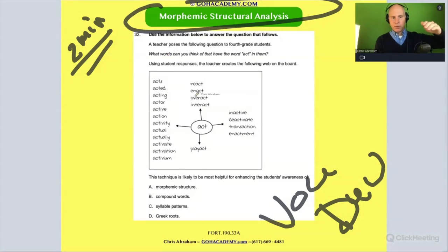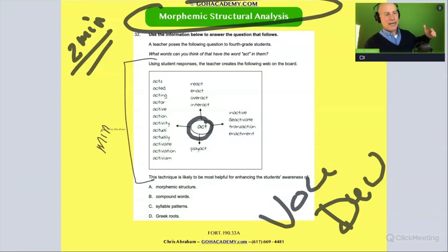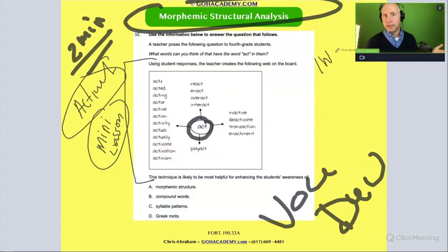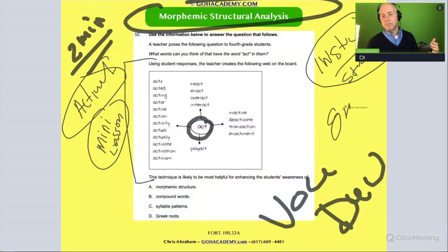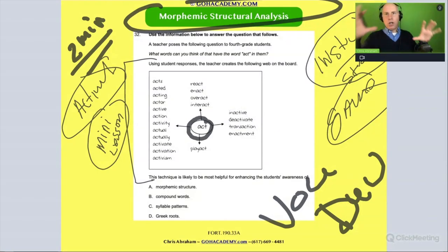We have a teacher working with the word 'act' — a very basic, everyday tier-one word, a single-syllable word. The activity the teacher is doing — we can call it a mini lesson, an activity, or an instructional strategy. The teacher is doing an instructional strategy where they build on that base word, and this is an example of the type of instructional strategy you'll need to write about in your essays.